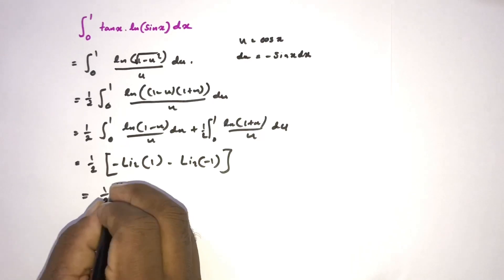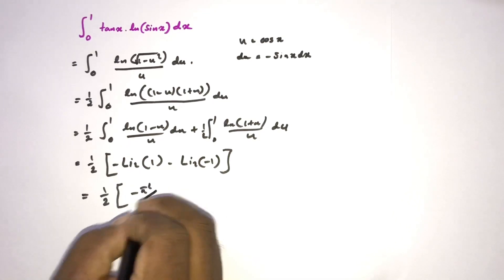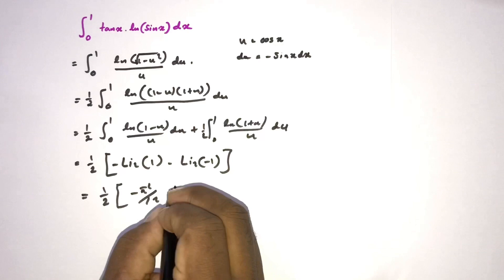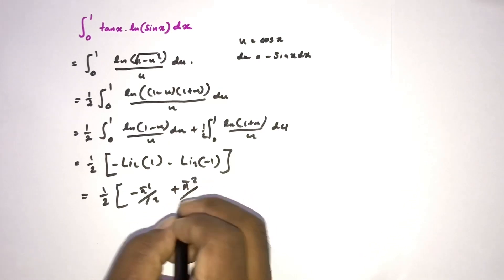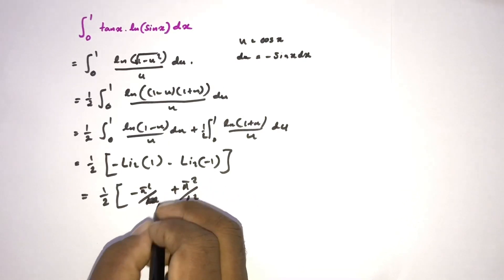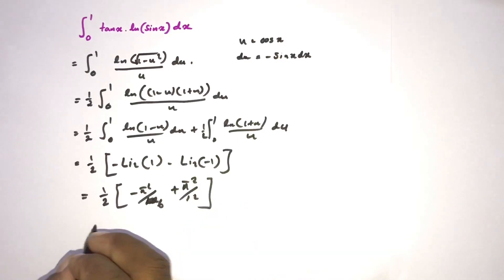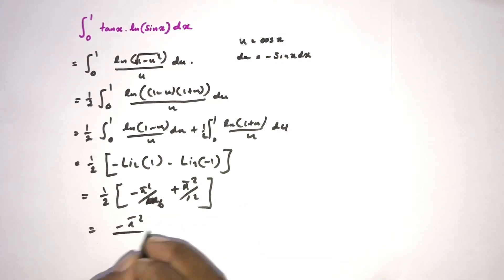Okay, then if we simplify this, we know minus π squared over twenty-four.